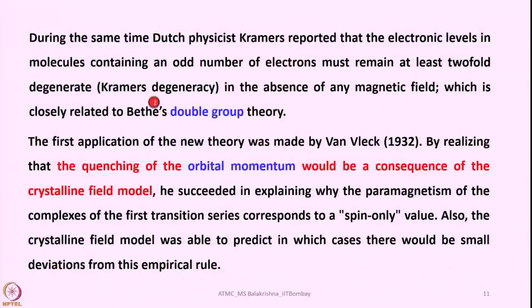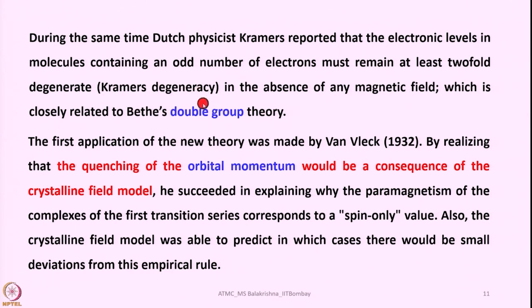During the same time, Dutch physicist Kramers reported that the electronic levels in molecules containing an odd number of electrons must remain at least two-fold degenerate. This is also called Kramers' degeneracy rule, in the absence of any magnetic field, which is closely related to Bethe's double group theory.